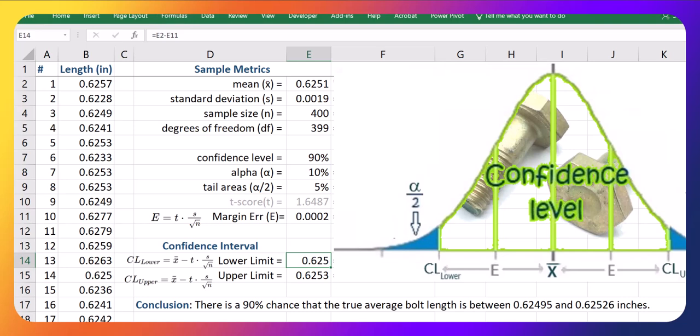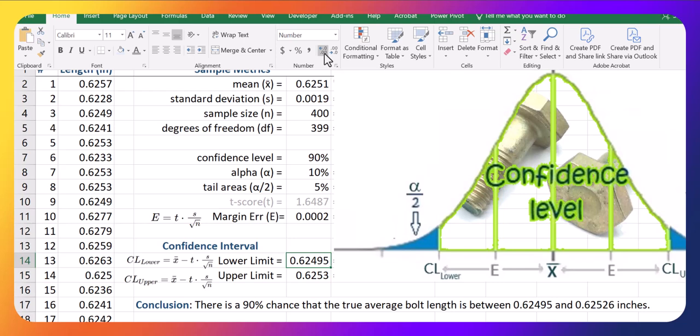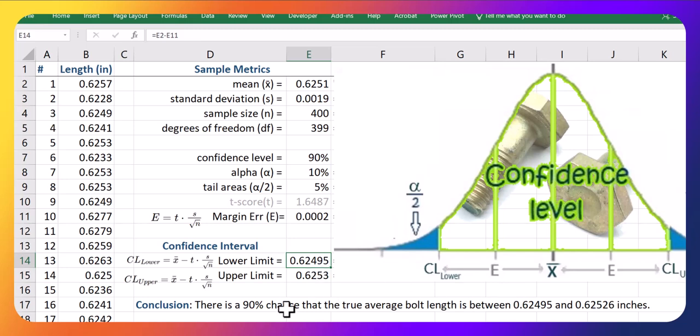If we show a couple more decimals here, we can get even more precise if you want. That's actually, well, it keeps going, but we can get a little bit more precise. So our actual true average bolt length is somewhere between 0.62495 and 0.62526 inches in length.